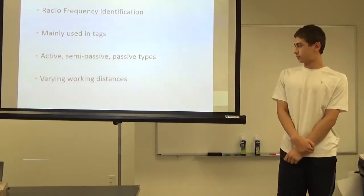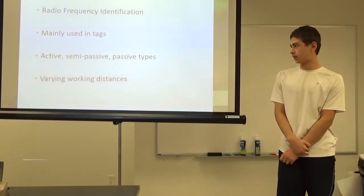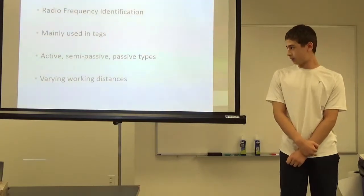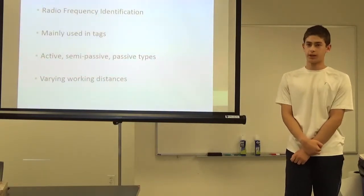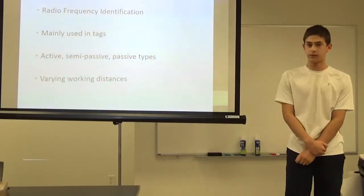There are three types: Active, semi-passive, and passive. Active is where it actively seeks the receiver to send data to. And passive is where it will only wake up when there's a receiver nearby. Each RFID tag has a certain working distance.